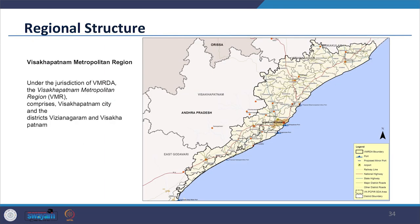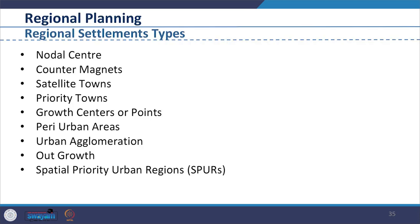We now look at various settlements in the region. Every region has a special structure depending upon its settlement levels and types. Some of the identified settlement types by the URDPFI guidelines are: nodal center, counter magnets, satellite towns, priority towns, growth centers or points, peri-urban areas, urban agglomeration, outgrowth, and Spatial Priority Urban Regions (SPURs).